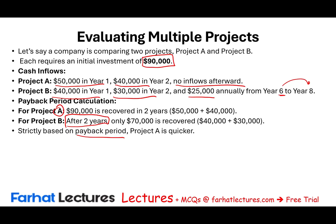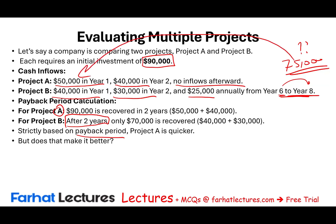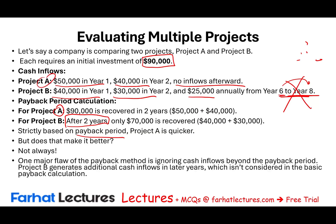But does it make sense? Not really. The payback period ignores years six through eight, where Project B generates an additional $75,000. We're ignoring this. To make a better decision, we should use the discounted payback period and discount that $75,000 to see if Project B is worth undertaking. One major flaw of the payback period is that it ignores cash inflows beyond the payback period — Project B generates additional cash flows in later years, which the basic payback calculation doesn't consider.